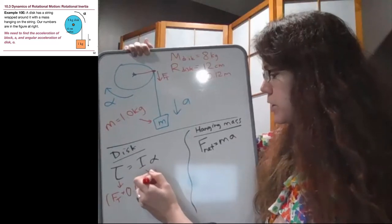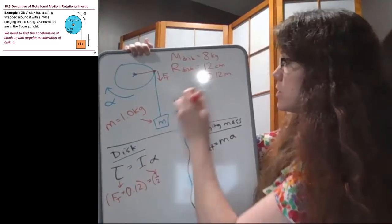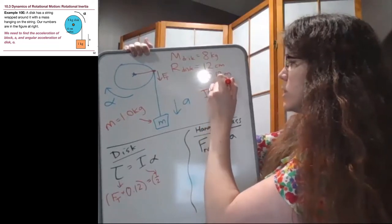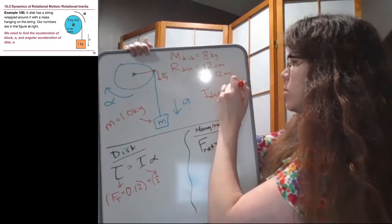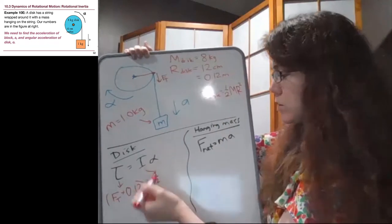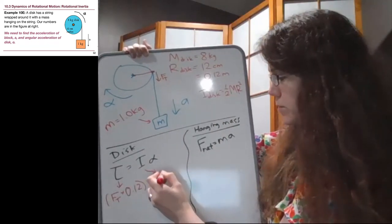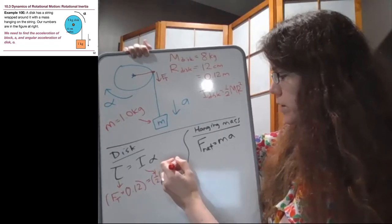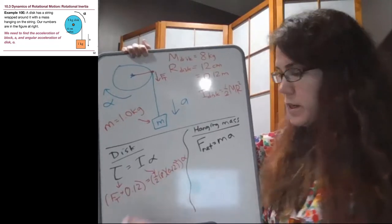And then for the moment of inertia, we can use one half m r squared. So for the moment of inertia of a disk, we remind ourselves that's one half m r squared. So for the disk, we have one half times eight times 0.12 squared. And then the alpha is still here.